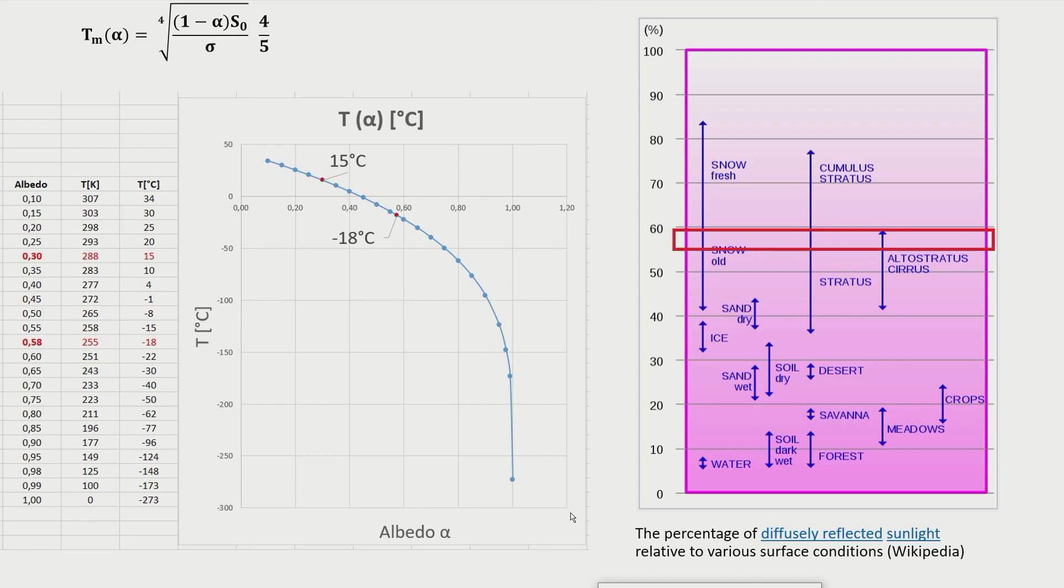Before I come to a final conclusion, I want to check how errors or changes in the albedo alpha influence the result of this calculation. For this purpose I plotted the mean Earth's surface temperature as a function of the albedo alpha. In this graph we can see that we need a quite high albedo of about 0.58 to achieve the minus 18 degrees centigrade needed for a 33 degrees centigrade greenhouse effect.